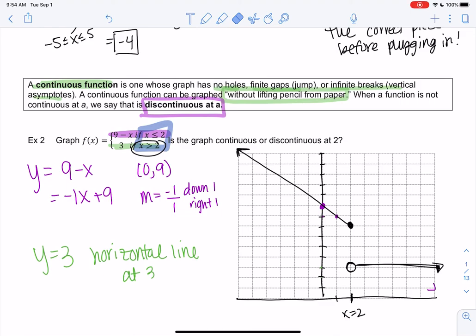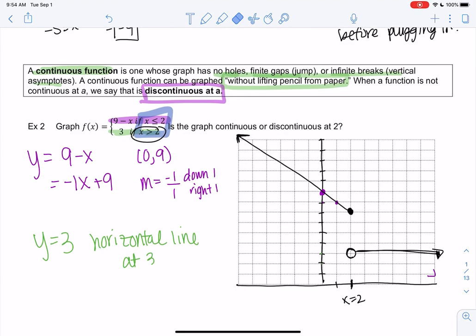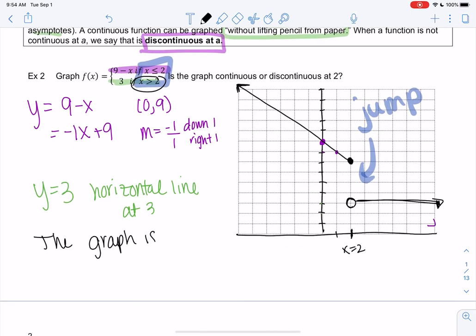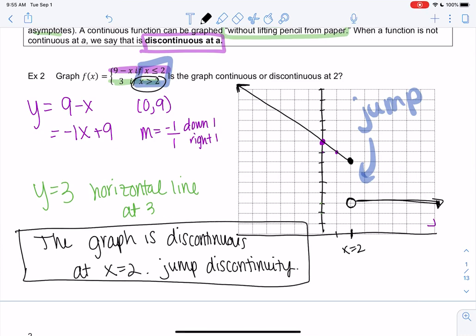And that is a piecewise function. Notice I have two pieces. So the left side is the 9 minus x. And the right side is 3. And then looking at this graph, is it continuous or discontinuous at 2? Would I have to pick up my pencil if I wanted to draw this? Yeah. We have this jump. The graph jumps. That's what I meant by a finite gap. It's a finite size, but there's a jump. So yes, the graph is discontinuous at x equals 2. We would call this a jump discontinuity. So that's how you graph piecewise.